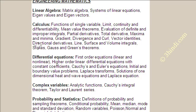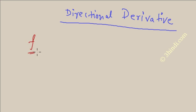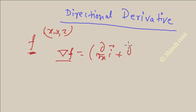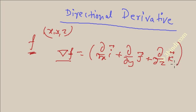In this video I will teach about directional derivatives. Suppose f is a scalar function of x, y, z. The gradient of f, or del f, which I have already explained in a previous video, is a vector quantity. It is written as (∂/∂x)i + (∂/∂y)j + (∂/∂z)k applied to f.